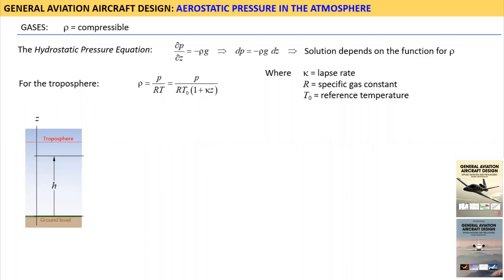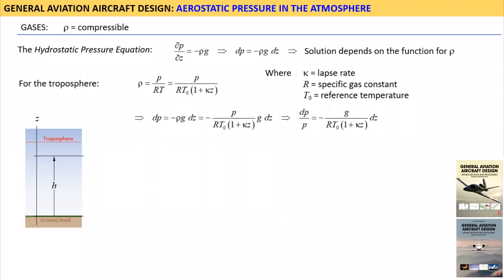Alright, let's focus again on the hydrostatic pressure equation and substitute the new representation of the ideal gas law. Next we separate the variables further by ensuring the pressure is on one side of the equal sign and the remainder on the other.